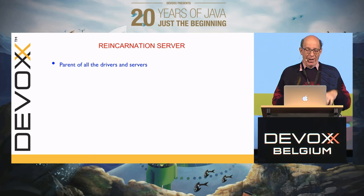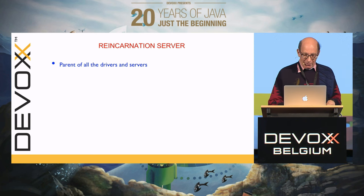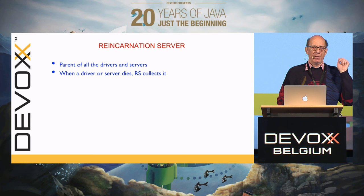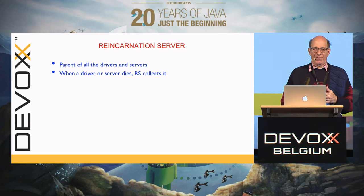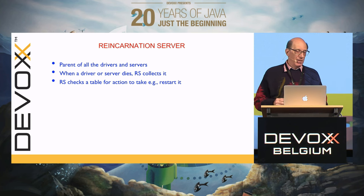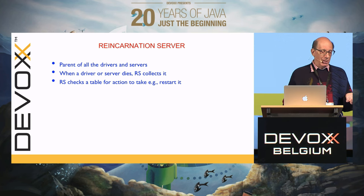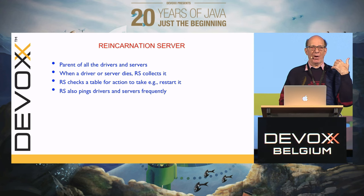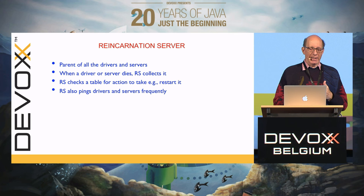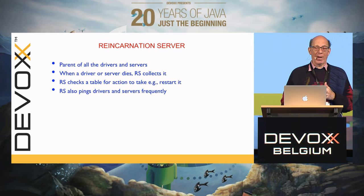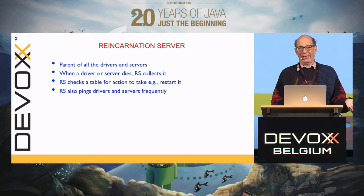The reincarnation server is an important piece — it's the parent of everything. It starts at boot time and is the parent of all the drivers and all the servers. If a driver or server dies, the reincarnation server hears that its child died and can take action. Typically it will run a shell script and restart it. It can restart even the disk driver — mostly it fetches the new driver from the disk and starts it up as a new process. In the case of the disk driver, since it can't get to the disk because the driver just died, we keep a copy of the disk driver in the RAM disk at all times.